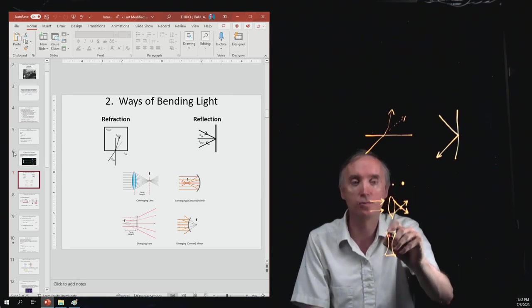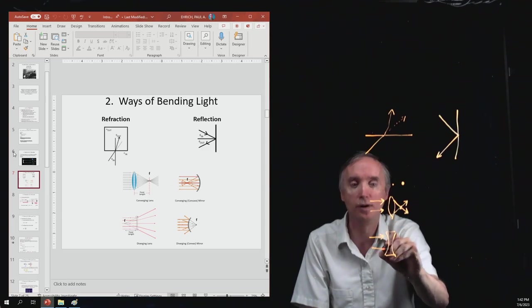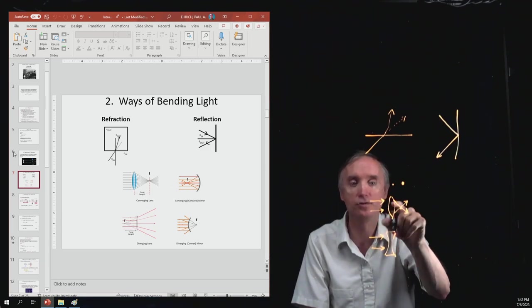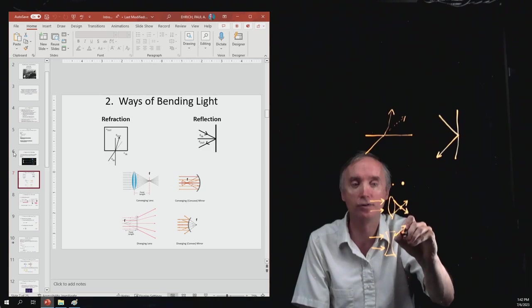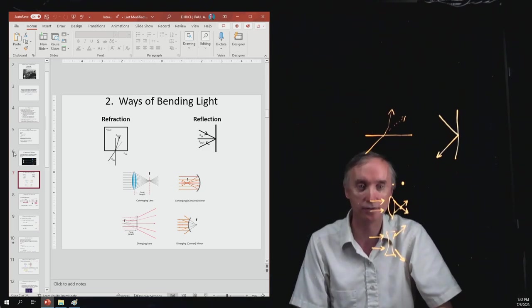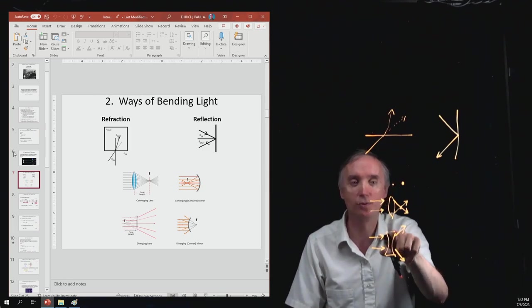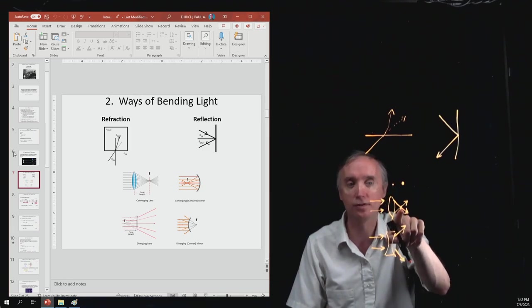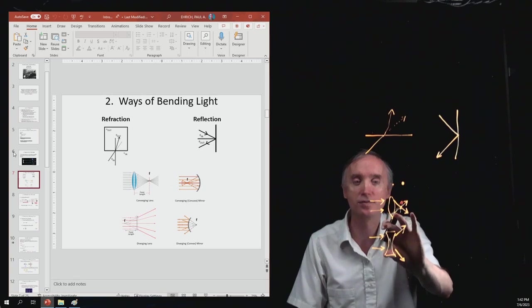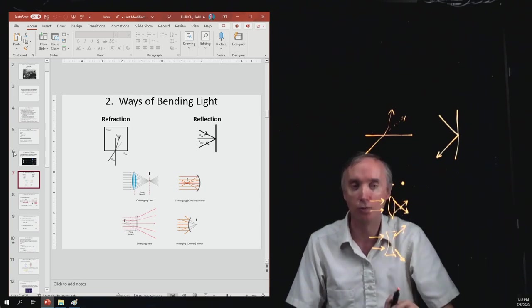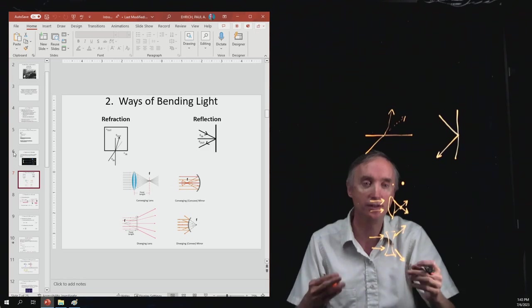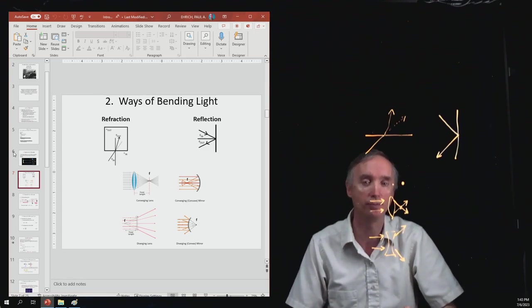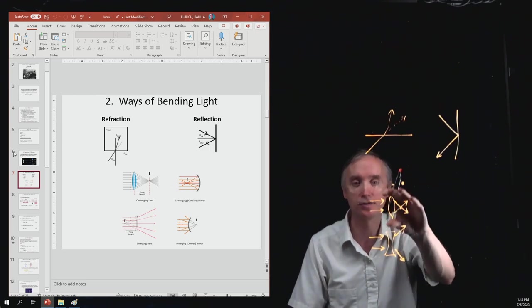This one, light comes in but instead of converging it diverges. So this one is a diverging lens. Now you might be saying, well what's the point? If it doesn't make a focus, well this can be used to control where the light ends up inside the telescope. So it's really important, these two different kinds of lenses.